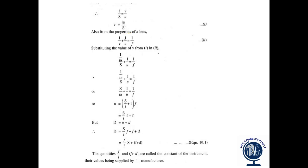Now we have from the properties of the lens: 1 upon V plus 1 upon U equals 1 by f. So now we will put the value of V in this second equation. We get 1 upon I U upon S plus 1 by U equals 1 by f. After simplifying this equation, we get the value of U as S upon I plus 1 into f. So we will multiply f with this whole bracket. We get S by I into f plus f.